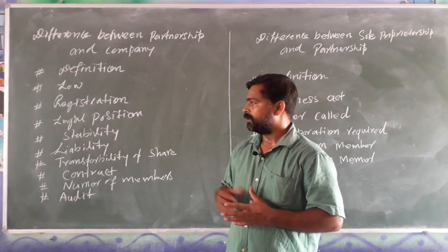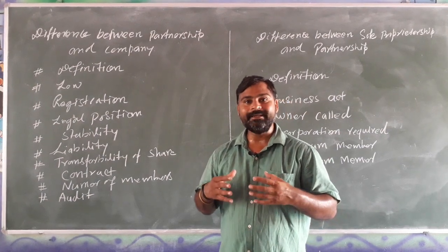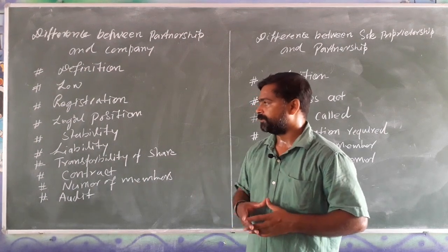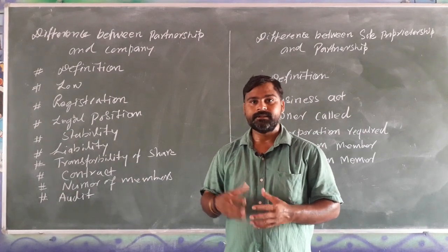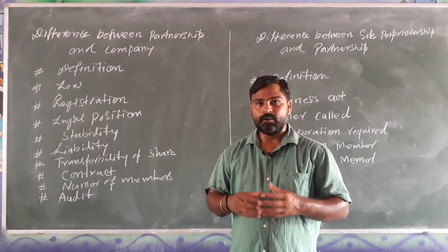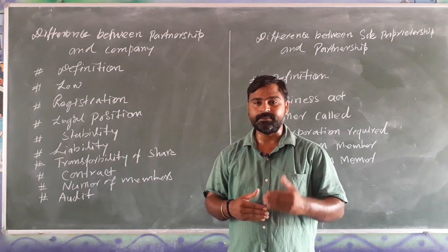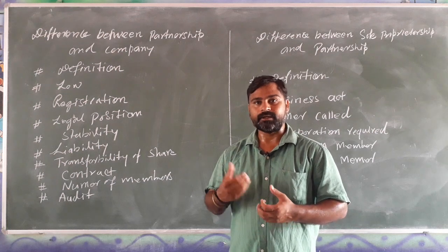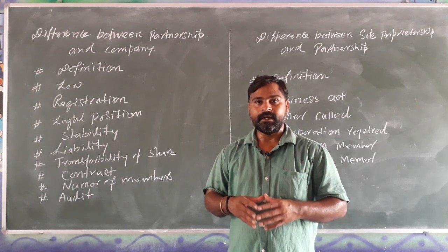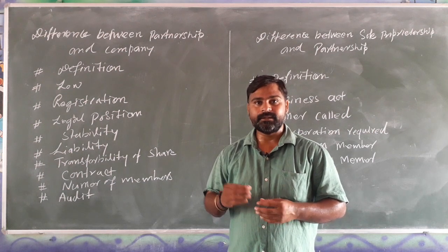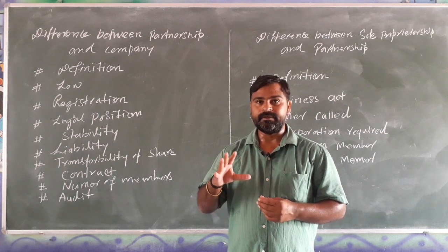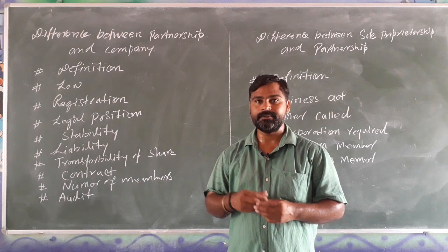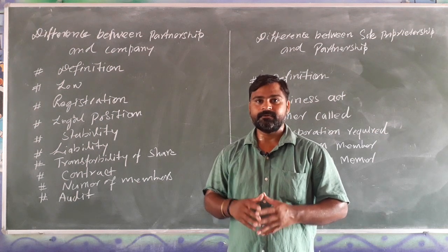For legal position, a partnership does not have any separate legal position — a partnership is not separated from its owners. But a company has its own legal entity and is known by its own name. For stability, a partnership is not as stable as a company, because conflicts between partners may cause the partnership to dissolve. A company has more stability than a partnership.